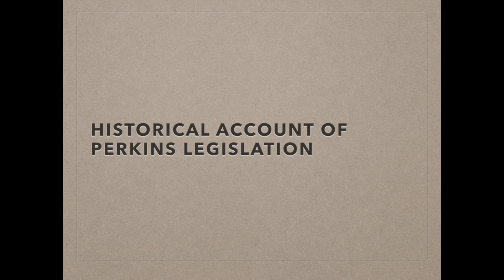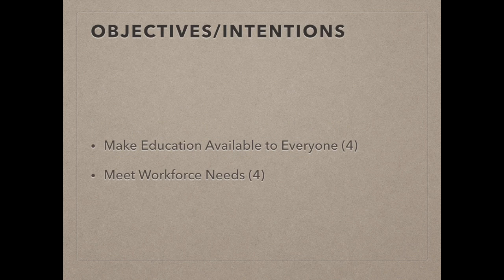The historical account of Perkins legislation. When the Perkins Act was first presented, the main objective was to make education available to everyone. It did not matter if the student was old or young, graduated or working, handicapped or in the military — the funds were there to help. They wanted to meet every student's needs as well as meet the needs of the workforce. The beginning acts were more concerned with supplying the funds for the individual more than the actual program.